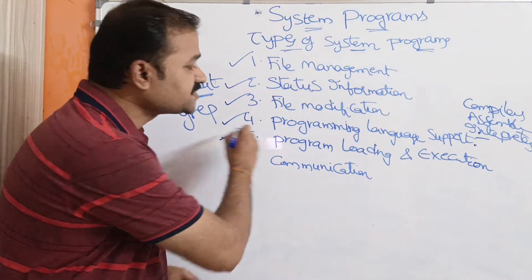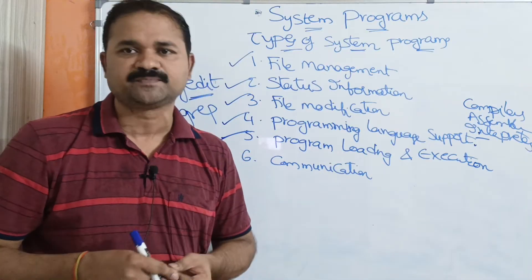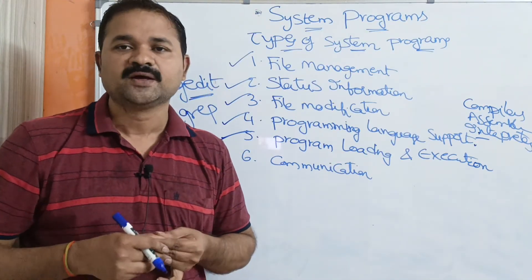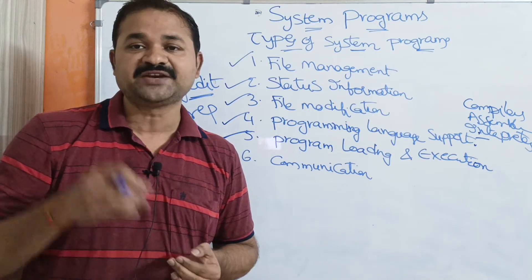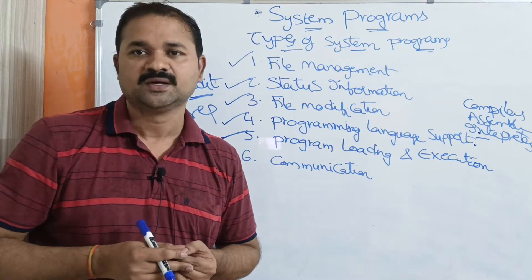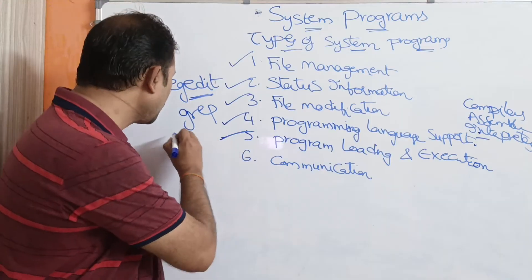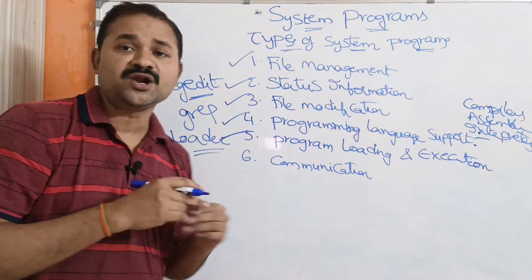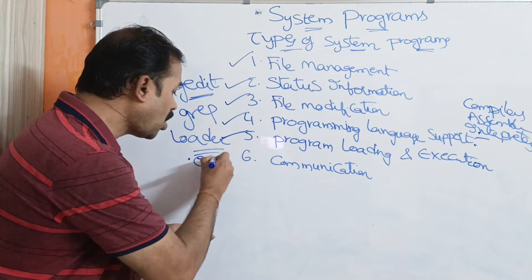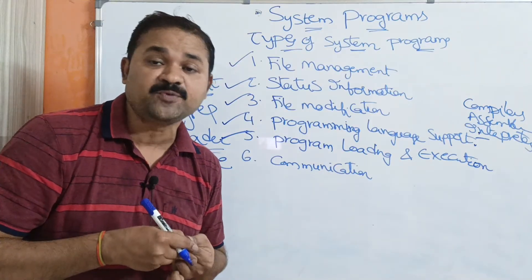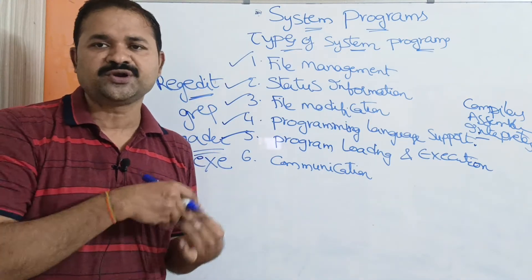The fifth type is program loading and execution. When we save a program, it is stored in the hard disk. At the time of execution, that program is transferred from the hard disk into main memory, and this is handled by the operating system using a system program called a loader. The loader loads the program from hard disk into main memory, and once loading is done it creates an .exe file — an executable file — meaning the program is ready for execution, and the CPU can execute it.